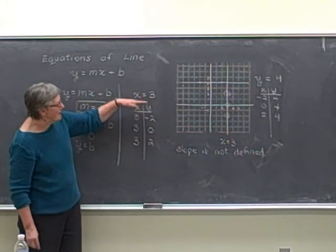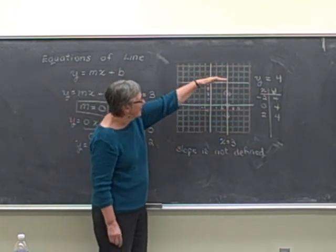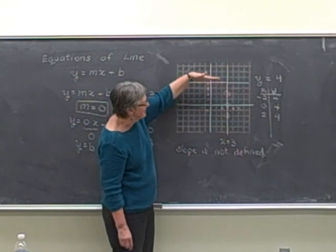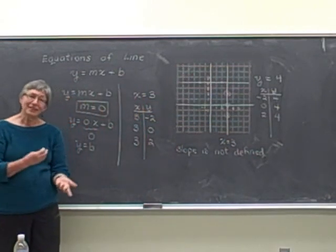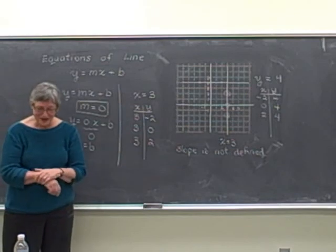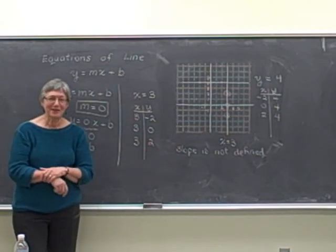Any equation that has the form x equals a number is going to be a vertical line. Any equation that has the equation y equals a constant is going to be a horizontal line. Well, that concludes our review of equations of lines and how to graph them. And I want to wish you luck in your algebra class.